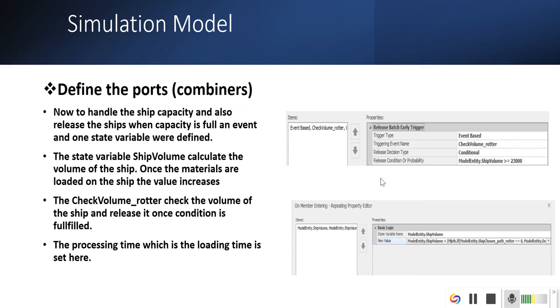Define the ports. There are two types of systems available to check the volume and also check the processing time. The volume is checked by event state variable that checks after certain time if when members are batched into the ship. The volume increases after it.